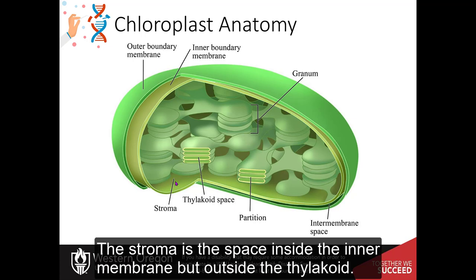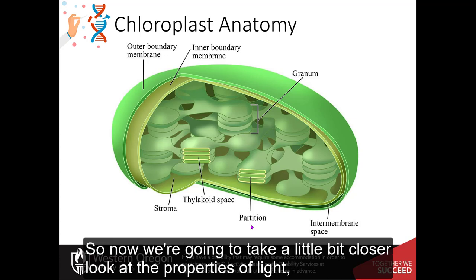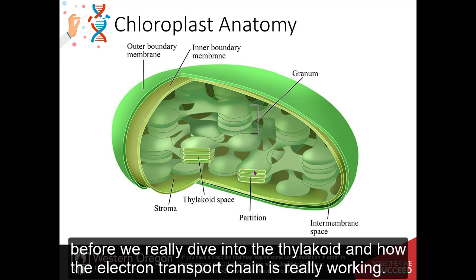The stroma is the space inside the inner membrane, but outside the thylakoids. So now we're going to take a little bit closer look at the properties of light before we really dive into the thylakoid and how the electron transport chain is actually working.